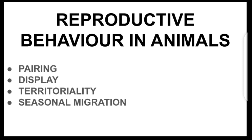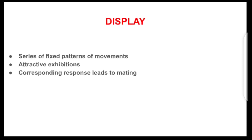In the last class we started looking at reproductive behaviors, which we also called courtship behaviors in animals. We defined courtship behavior as the instinctive behavior in response to some external stimulus in animals. It is that pattern of behavior that comes before mating and reproduction. We said there were several types of reproductive behavior, including pairing, display, territoriality, and seasonal migration. In the last class we looked at pairing as a reproductive behavior. So today we'll be looking at display as a reproductive behavior.